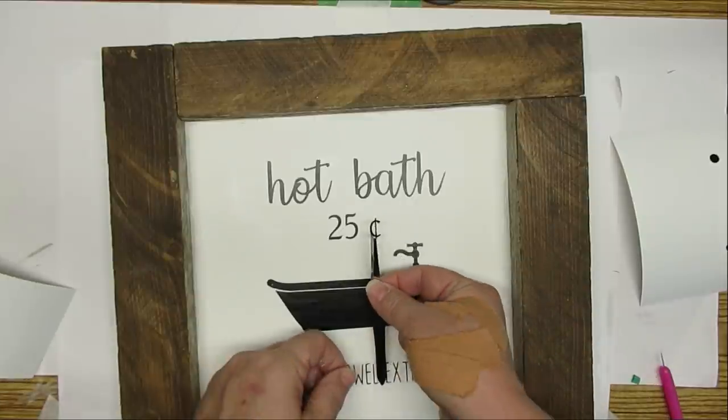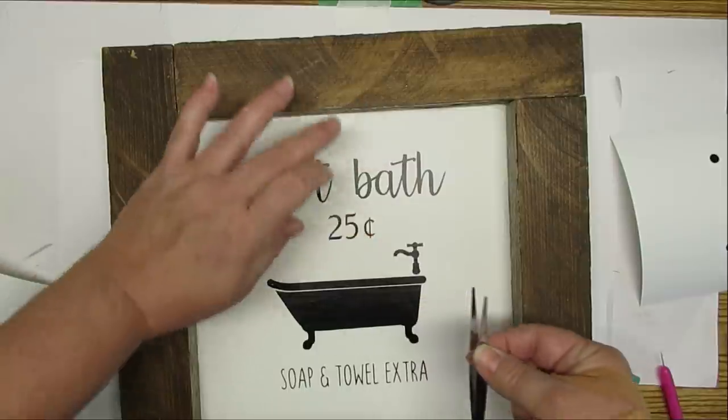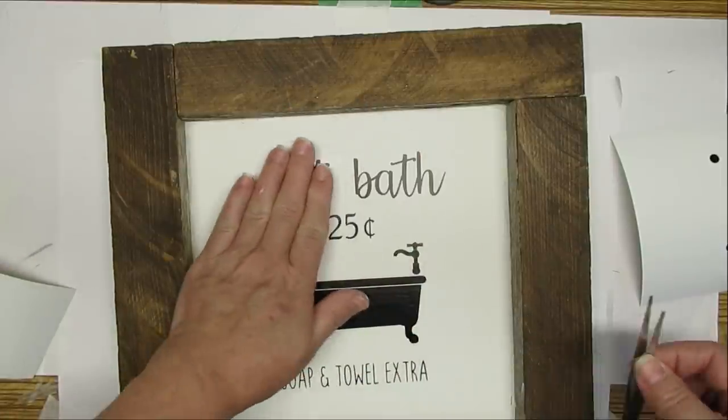The scent sign didn't come off with the transfer tape so I'm just going to use a pair of tweezers to peel it off and then place it where I want it to be.